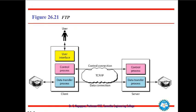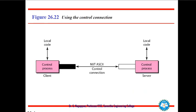This is how the file transfer protocol takes place through the TCP/IP layers. For the control connection, when the client sends a local request, the local code comes to the control process representing what is going to be done. The control process converts it into Network Virtual Terminal (NVT) ASCII characters, which goes as a request to the control process on the server side, where it is converted back into local code and communicated to the server.